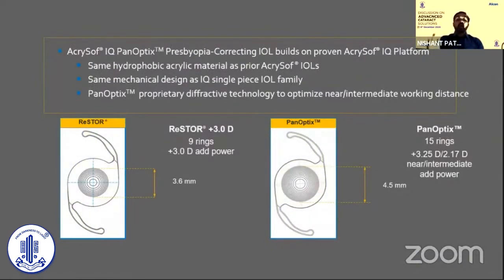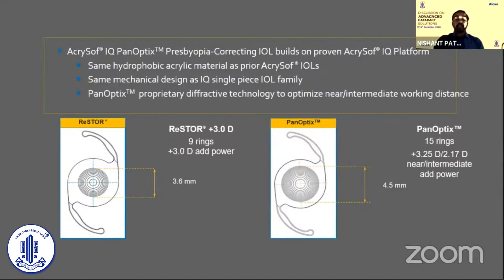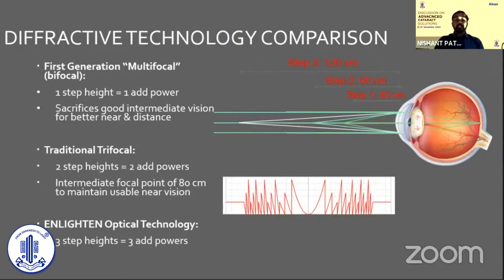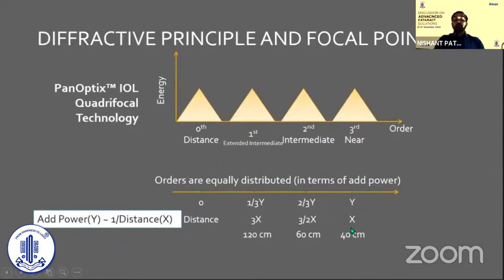The Panoptix design itself has been tweaked — it is the optics that scores over the traditional trifocal IOL. The material is the same time-tested platform. The diffractive zone has increased from the Restore's 3.6 mm to 4.5 mm, with two additional powers for intermediate vision at 60 cm and near vision at 40 cm. They worked out a principle of non-sequential diffractive optics making it effectively a quadrifocal IOL with four focal points. Taking the first focal point as X, the second is 1.5X at 60 cm, the third is 3X at 120 cm, and the fourth is for distance.